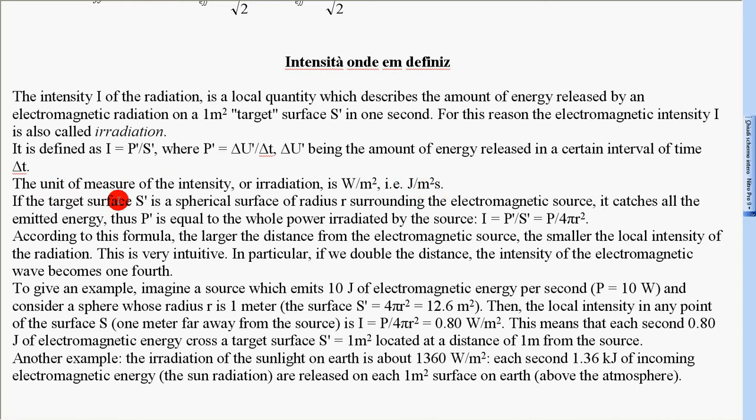If the target surface S' is a spherical surface of radius R surrounding the electromagnetic source, it catches all the emitted energy. Thus, P' is equal to the whole power irradiated by the source.